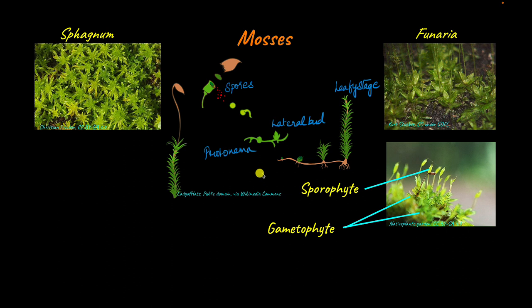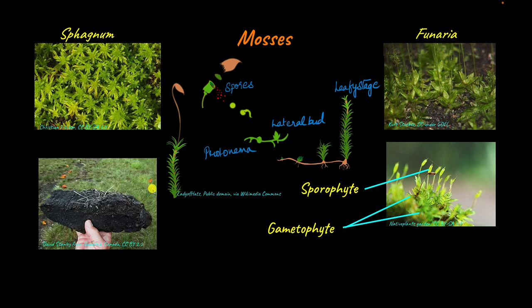Moss has a variety of uses. Sphagnum when dried is called peat and is used as fuel in many parts of the world. Moss can hold a lot of water, so it is also used in agriculture to condition the soil. Living material like plants are transported packaged in moss because of its water-holding capacity.